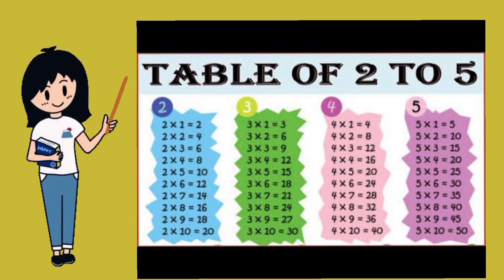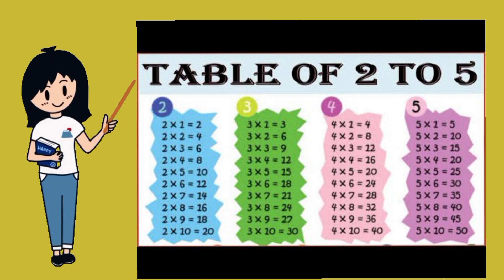Four sixes are twenty-four. Four sevens are twenty-eight. Four eights are thirty-two. Four nines are thirty-six. Four tens are forty.